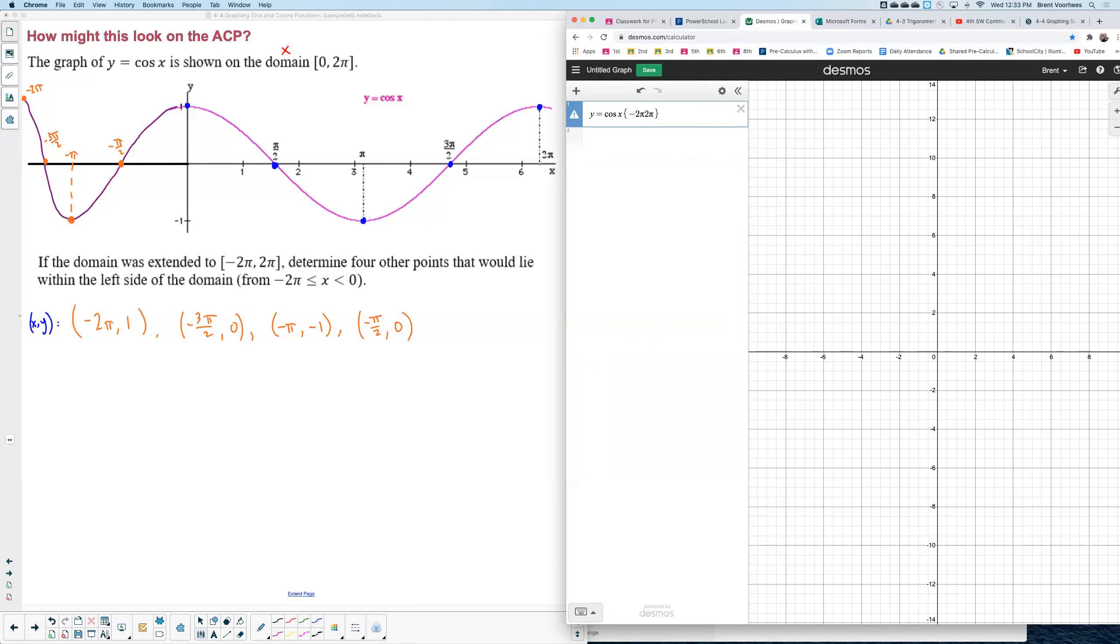I got it. You got to go less than or equal to x, which is less than or equal to two pi. My problem was I was using interval notation. Desmos likes inequalities.